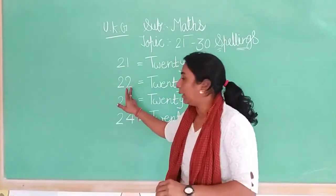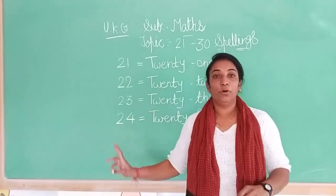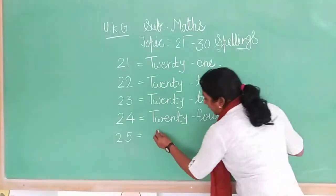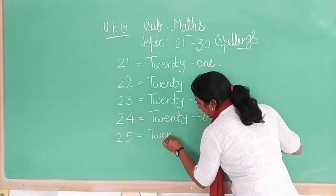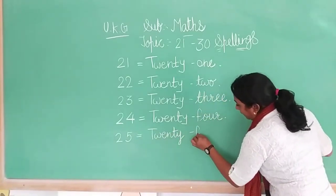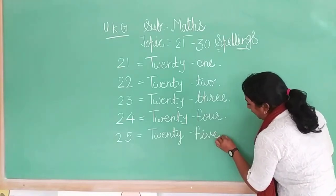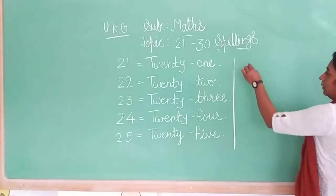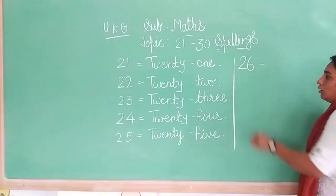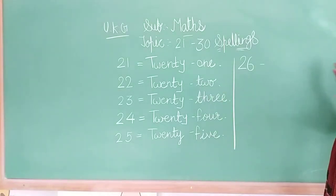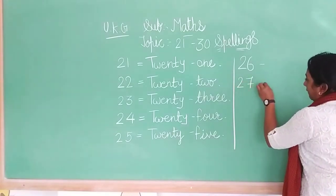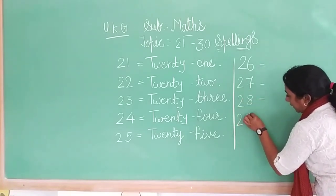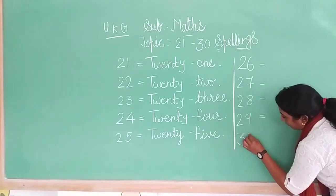21, 22, 23, 24, 25. 2, 5 — 25. After 25 comes 26. 25 after 26. Then 27, 28, 29, and 30.